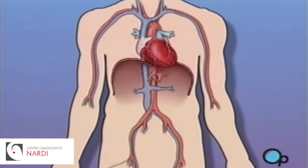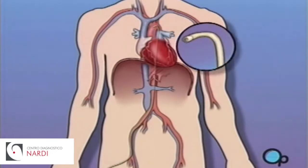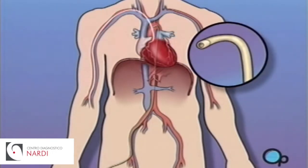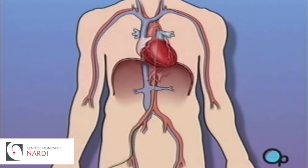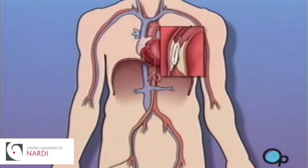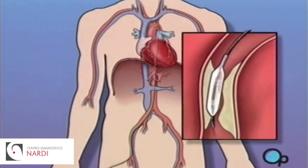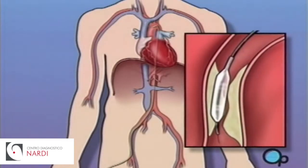During a balloon angioplasty, a heart specialist will insert a thin tube into the artery in your arm or leg and gently guide it towards the problem area in your heart. Once the tube is in place, a small balloon is briefly inflated in order to widen the narrowed artery.